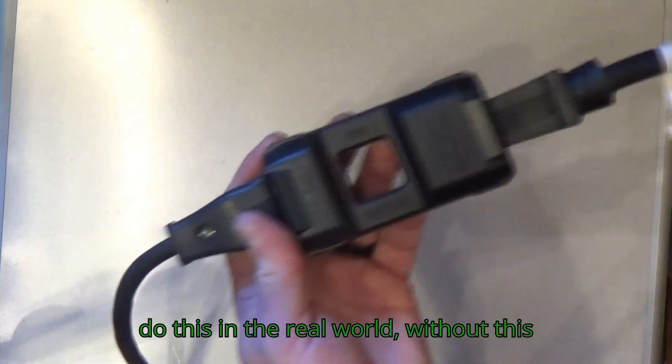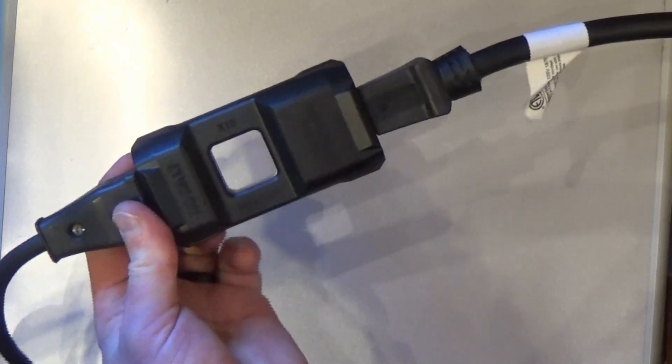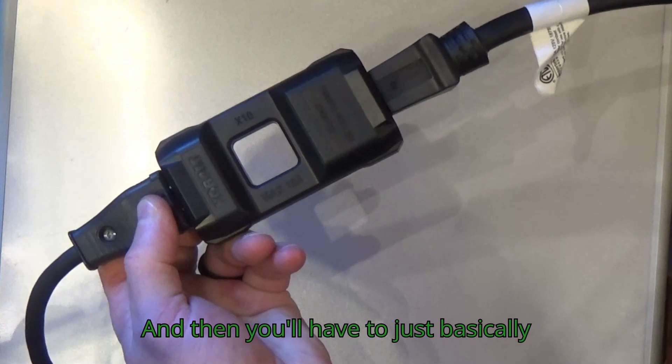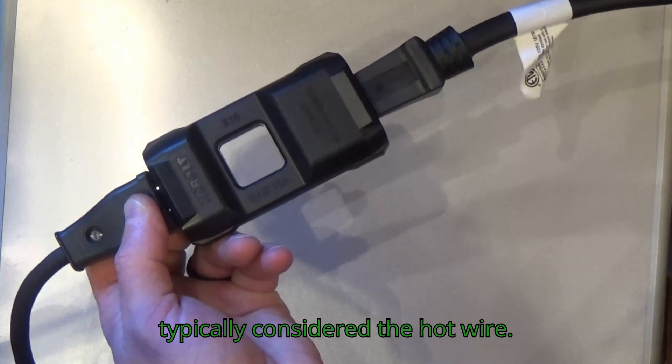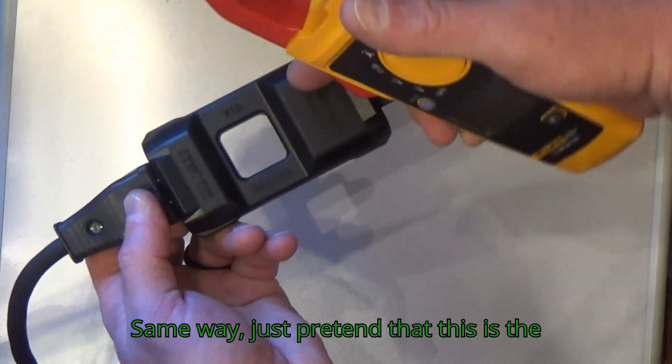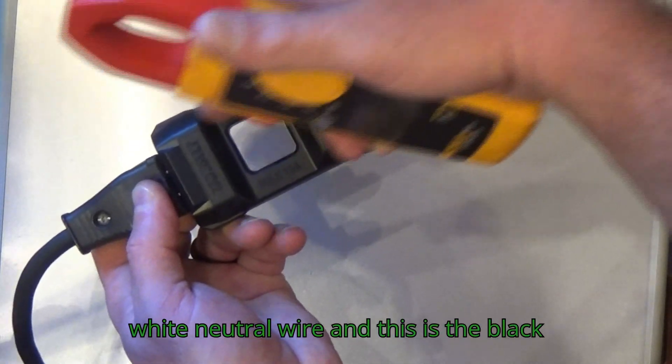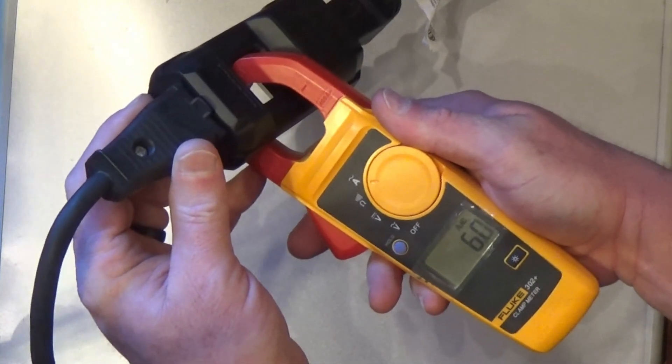Now to do this in the real world without this adapter for 120 volt AC, you have to have the cable pulled apart. And then you'll just basically catch around the black wire, which is typically considered the hot wire. Same way, just pretend that this is the white neutral wire and this is the black hot wire. Just clamp around it while it's in amp mode.